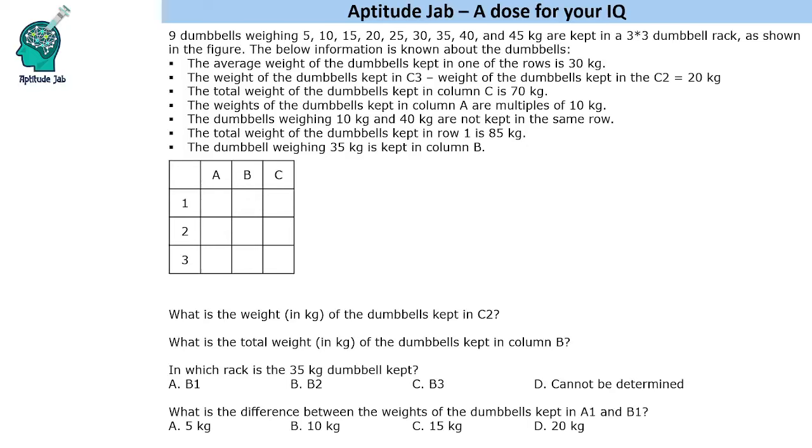Hello everyone, welcome to Aptitude Jab. This is a caselet. It says that there are 9 dumbbells with weights of 5, 10, 15, 20 and so on till 45 kg - all multiples of 5 - kept in a 3 by 3 dumbbell rack.